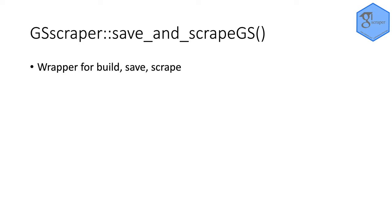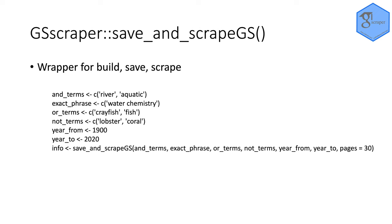The final function is save_and_scrape_Google_Scholar, which is just a wrapper that takes the building, saving, and scraping functions and pulls them together into one function. You input the terms you want in your search and create a global object — in this case 'info' — which is a data frame of as many search results as there are in your HTML files. It looks locally within your working directory for any HTMLs and extracts all the relevant information. In this case we're specifying 30 pages of search results, which would give us 300 results.